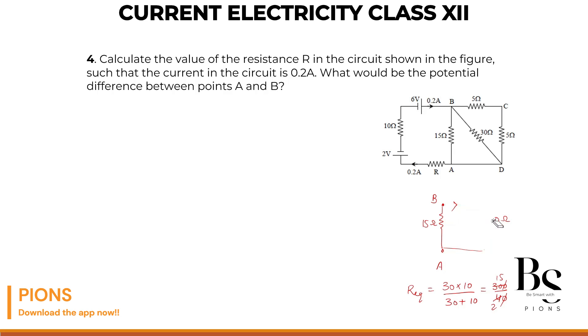So let me remove this whole thing. This will be our how much? 15 by 2. So this is our connected across this. Let me just redraw it. 15 by 2. Let me just recheck the calculations. So that is 30. That is 10. So 30 into 10. Correct. Upon 30 plus 10. So 300 upon 40. Yeah. 15 by 2. Now 15 by 2 and 15, they are in parallel with each other. So let's find the equivalent of that.